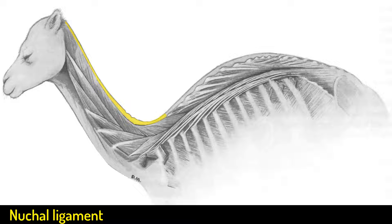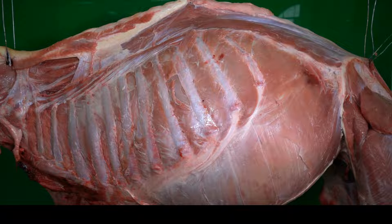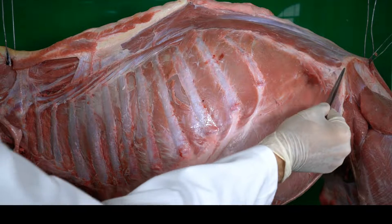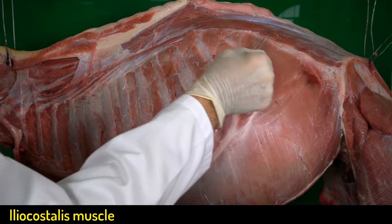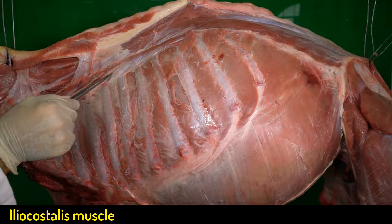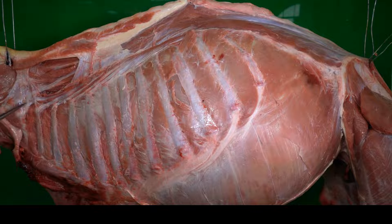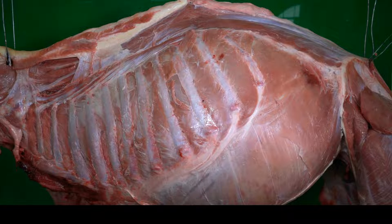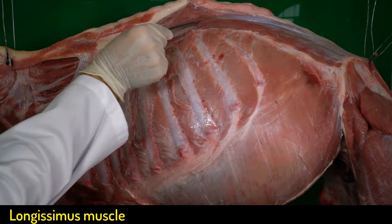Now let's move to the animal cadaver and try to find these muscles. Starting with the iliocostal muscle, which originates from the iliac crest and has two parts: the lumbar part and the thoracic part. The thoracic part inserts on the caudal border of the first eight ribs.